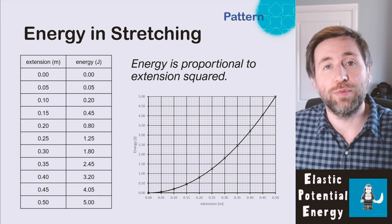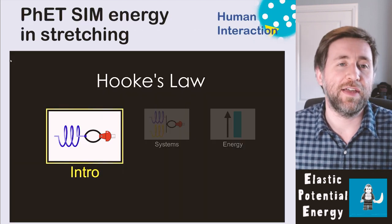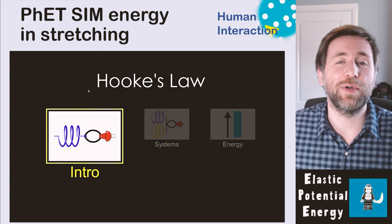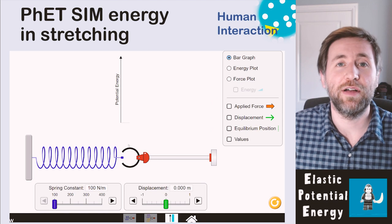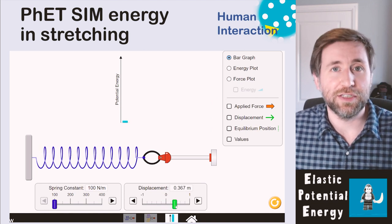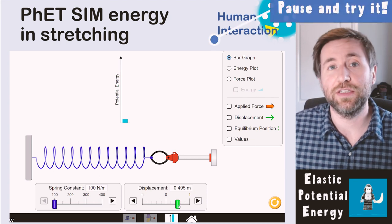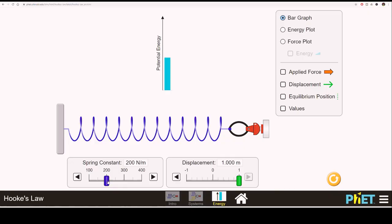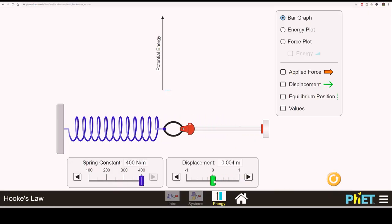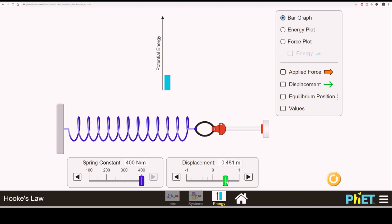Have a little play around with the energy PhET simulation. Simulations are excellent ways to get your head around difficult concepts, and PhET sims are the best simulations out there. Find this PhET simulation and change things like the spring constant and the extension, and notice the difference in energy stored. You should notice that if you double the spring constant, you double the potential energy, and if you double the displacement, you quadruple the potential energy.